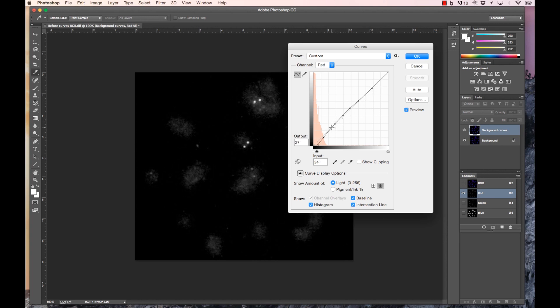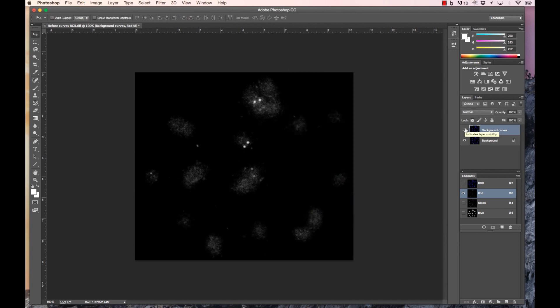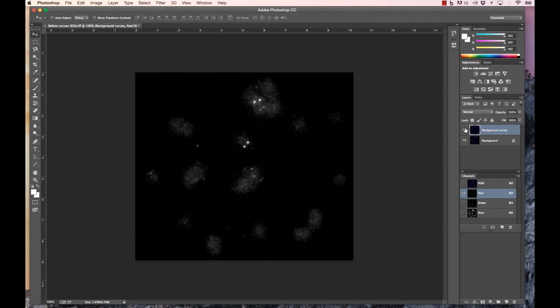Background is then reduced to the lowest level possible without diminishing the faintest signal. The strength of the small target hybridization signal is increased slightly and the background readjusted. Trial and error is required. Deselection of the visibility icon allows comparison between the curves processed image and the original.